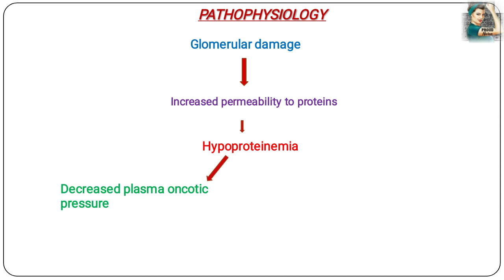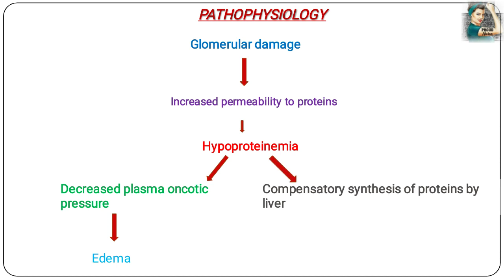This hypoproteinemia results in decreased plasma oncotic pressure. Oncotic pressure is a type of osmotic pressure which is maintained in the blood by blood proteins. When blood proteins are lost through the urine, the plasma oncotic pressure gets decreased, which results in a fluid shift in the body and the result is edema — the abnormal accumulation of fluid in the body parts. Also, due to this hypoproteinemia, the liver starts compensatory synthesis of proteins. To compensate for the loss of proteins, the liver increases the synthesis of blood proteins, which later results in hyperlipidemia.